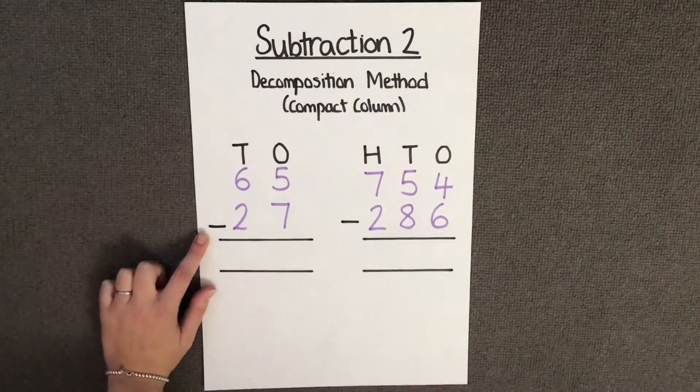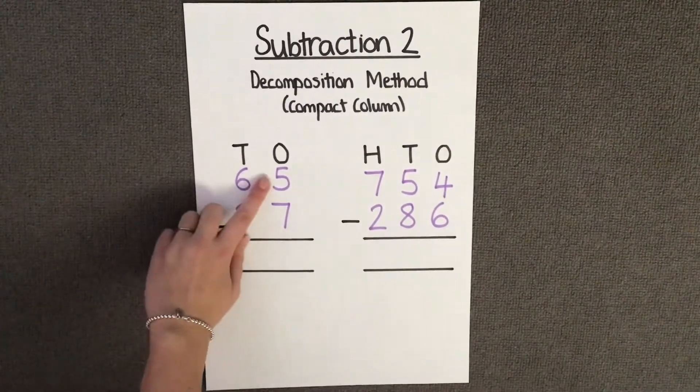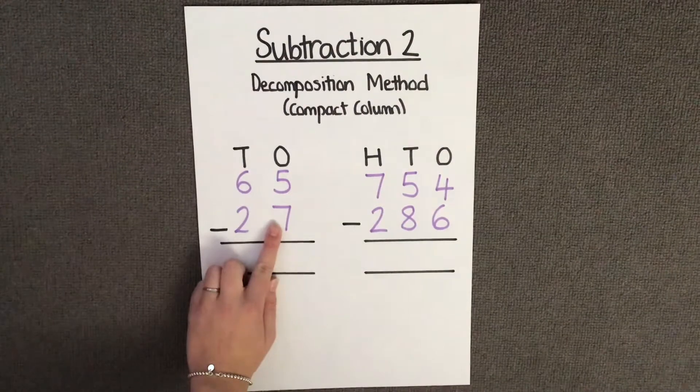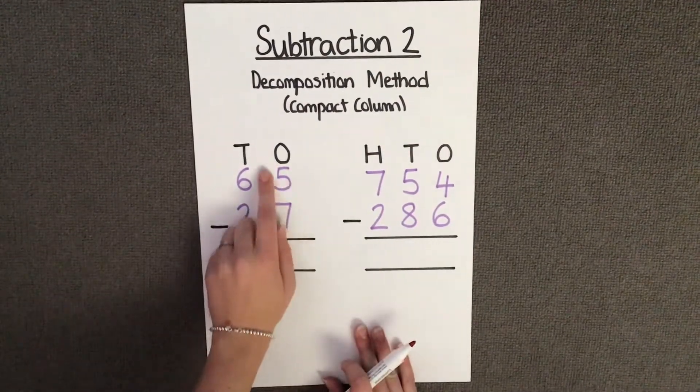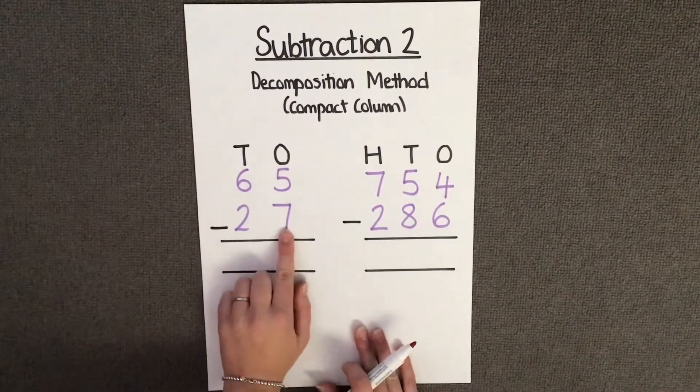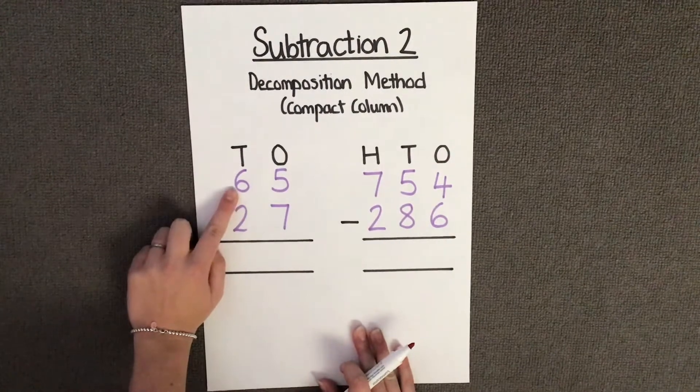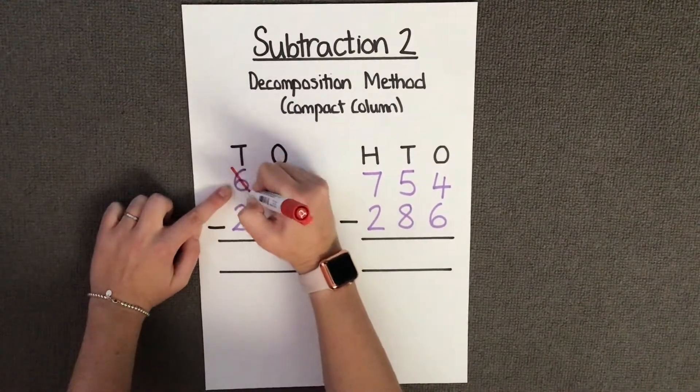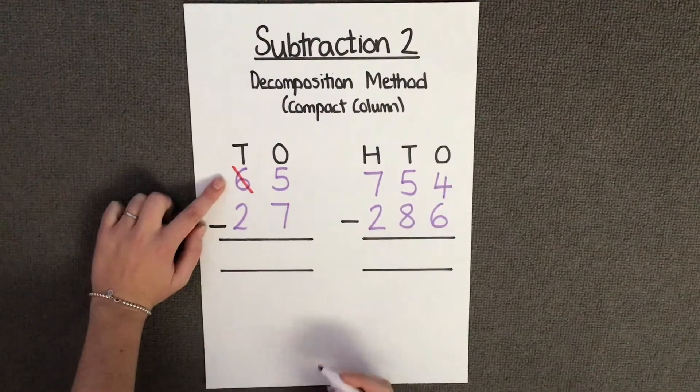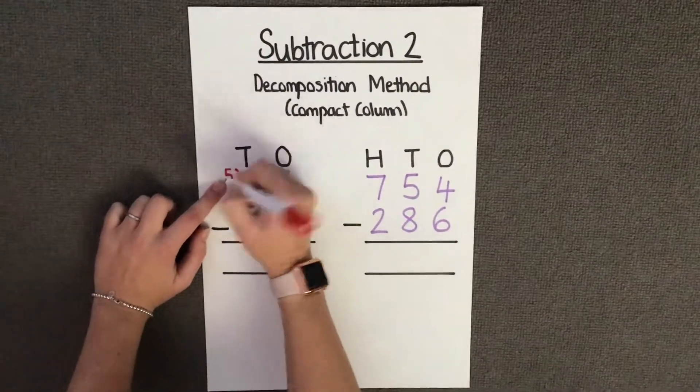First thing we need to do is subtract our ones. So I have 5 ones, take away 7 ones. Because I do not have enough ones here to take away 7, I have to borrow from the column next door. So I'm going to take 1 lot of 10 from the tens column, which leaves the tens column with 5 tens.